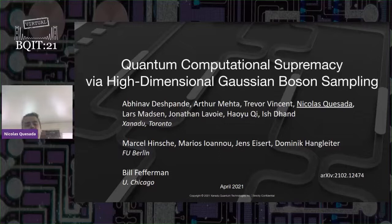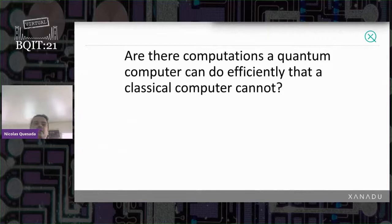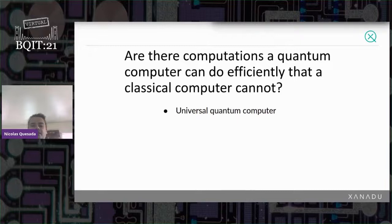Let me give you a broad context of what we want to study. The bigger question here is related to a question that has been asked from the very first talk today by Hansen, which is related to this extended Church-Turing thesis, which asks: are there computations a quantum computer can do efficiently that a classical computer cannot?